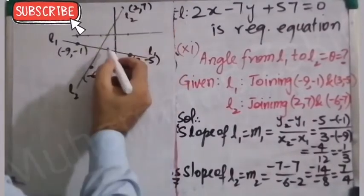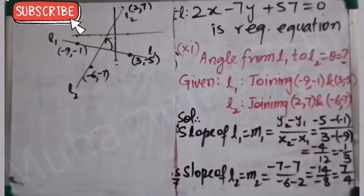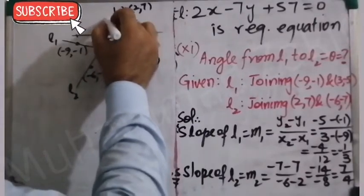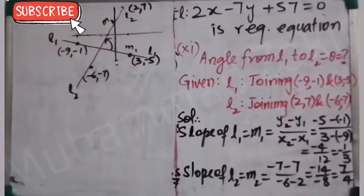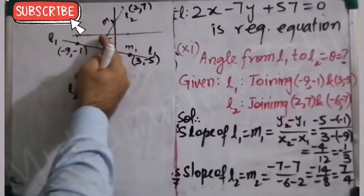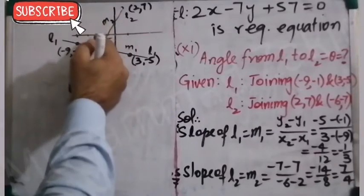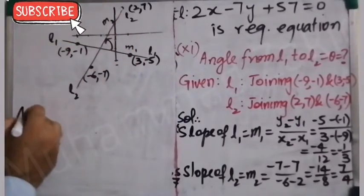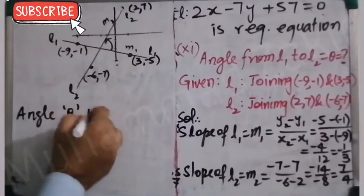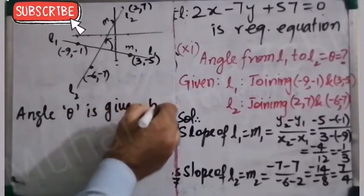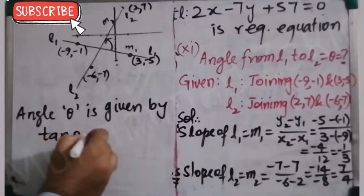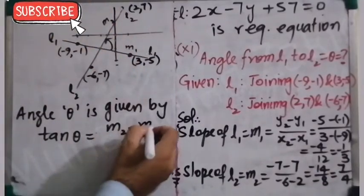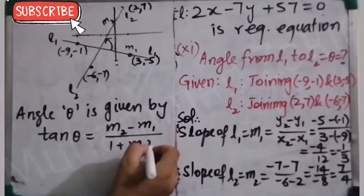The problem asks for the angle from L1 to L2. We know the direction must be anti-clockwise. So this is the direction from L1 to L2. Its slope is M2 and the tail slope is M1. The arrow head tells us it is M2 on the tip and M1 on the tail, so the formula uses M2 minus M1. The formula is: tan θ = (M2 - M1) / (1 + M2·M1).